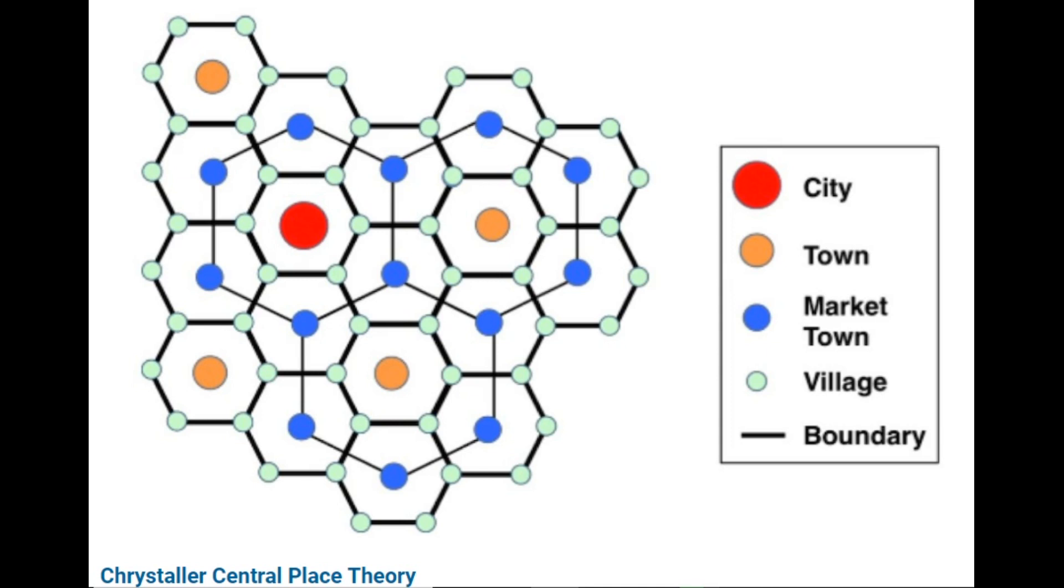In this marketing principle system, market areas of a certain level of the central place hierarchy are three times bigger than the next lower one. That's why K equals 3. The different levels then follow a progression of three, meaning that if one moves from one order of a place, the number of the next level goes up three times. For example, when there are two cities, then there would be six towns, 18 villages, and 54 hamlets.